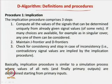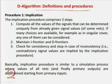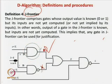The implication procedure involves: (1) compute all signal values that can be determined uniquely from the given signal values — if multiple choices exist, any one of them is considered; (2) maintain J and D frontiers; and (3) check for inconsistency and stop in case of contradiction. The implication procedure is similar to simulation, where the values of all nets are determined starting from the primary inputs.